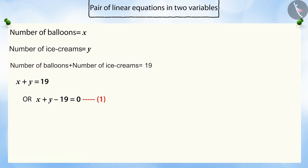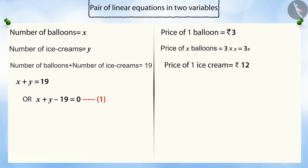Now let's see, if Rahul has spent 3 rupees on a balloon, then x balloons will cost 3 times x, that is, 3x rupees. And similarly, Rahul has spent 12 rupees on an ice cream. Then y ice cream will cost 12 times y, that is, 12y rupees.